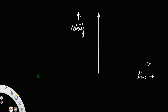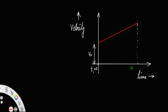For uniform motion, that means motion with constant acceleration, we have the velocity-time graph as a straight line. This length will be the initial velocity — we call that v₀, the velocity at time t₁ equal to 0. And after a particular time, at t₂ equal to some time t, the velocity will be v — that is the final velocity.